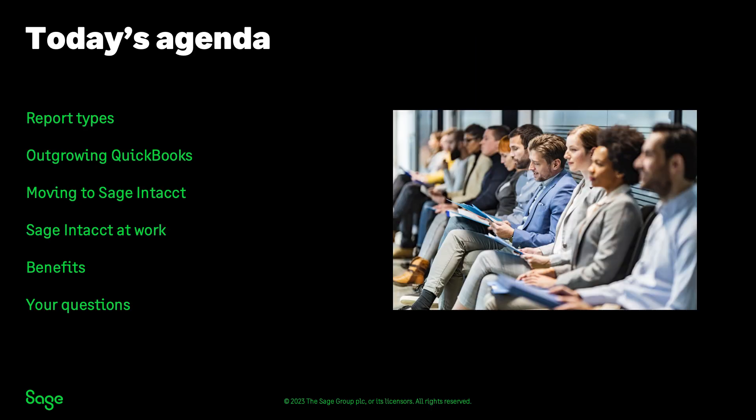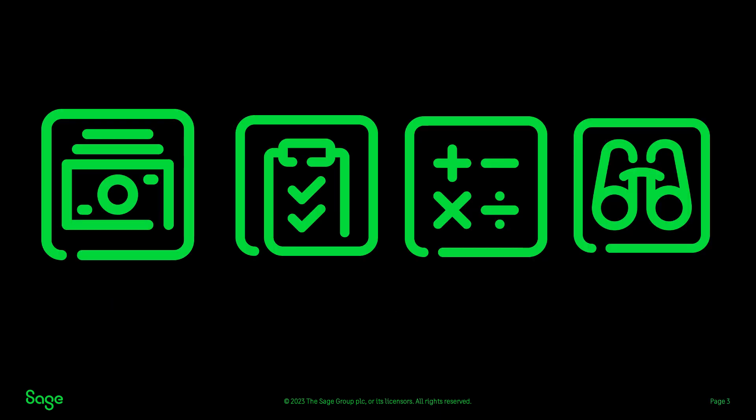Our agenda today is this. First, we'll look at the types of reports that growing companies need. Then, we'll look at signs that you've outgrown QuickBooks reporting. I'll share a real-life example of a QuickBooks user who moved to Sage Intact. I'll show you a demonstration of Sage Intact reporting. Then I'll share the benefits you can expect using Sage Intact for reporting, and lastly, we'll answer questions and let you know where you can find more information. Let's get started.